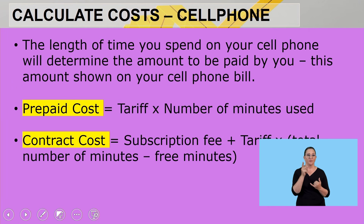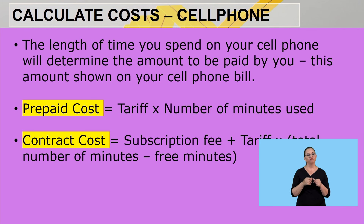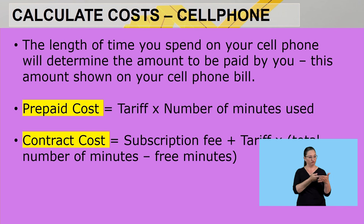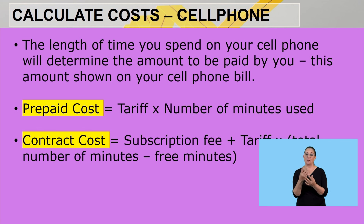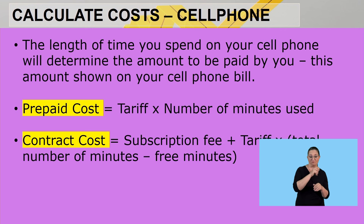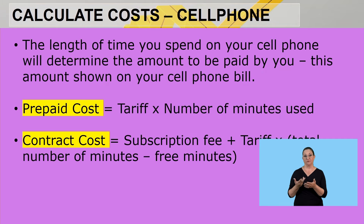Now we are looking at the cell phone tariff. The length of time you spend on your cell phone determines the amount to be paid, shown on your cell phone bill. We have two types: prepaid and contract. For a prepaid, the formula is tariff multiplied by number of minutes used. For a contract, there is a subscription fee plus the tariff multiplied by the total number of minutes, minus any free minutes.